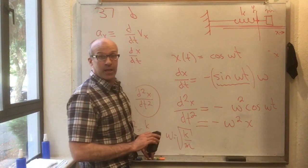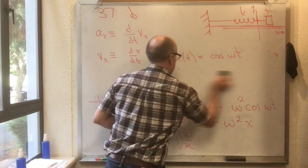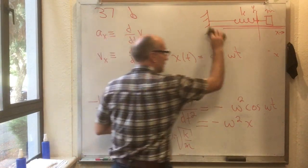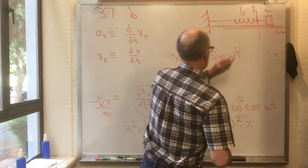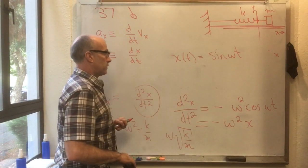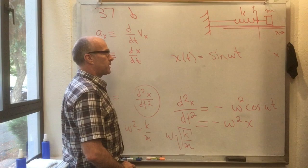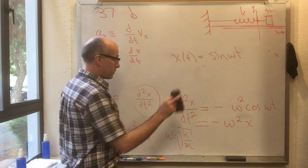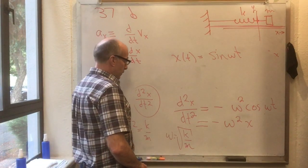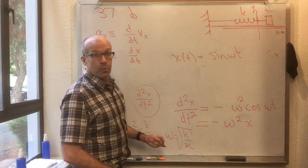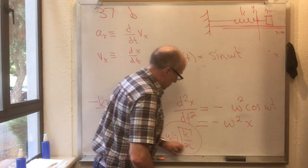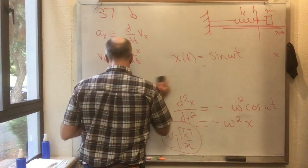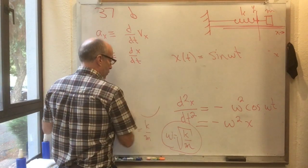Now let me show you another guess that works. You see that guess that works? That guess also works. You should check it. Check that x of t equals sine omega t works. Do the two derivatives. Find out what condition it is. Surprise! The condition is going to turn out to be the same condition. So that guess works too.